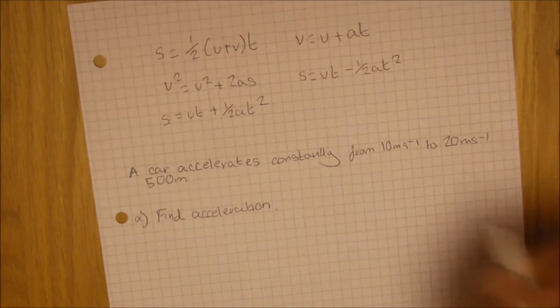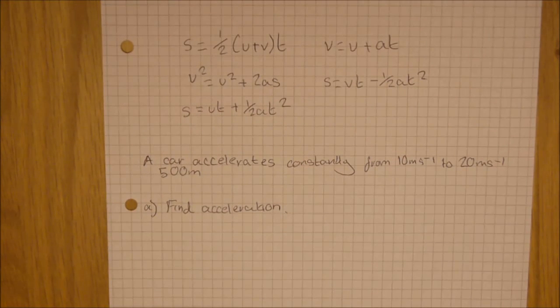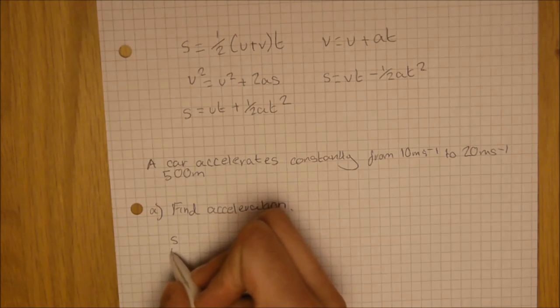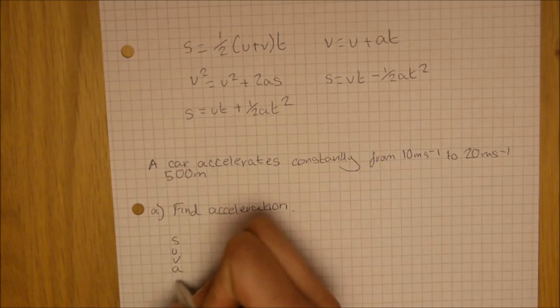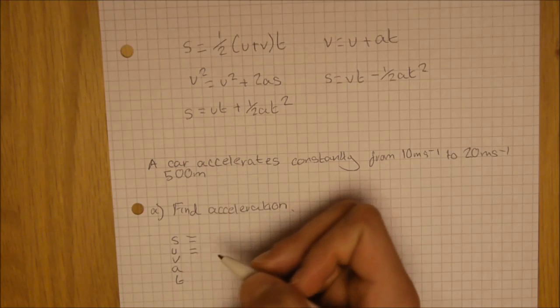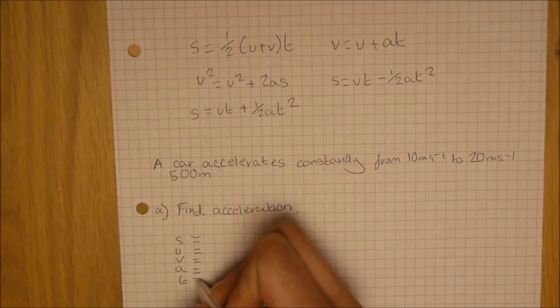Now, the first way you've got to do is you've got to work out which equation to use. And the only way of knowing which equation to use is if you work out what variables you do have and which ones you don't. So what you normally do is you start by writing S, U, V, A, T. SUVAT. And S is distance, U is initial velocity, V is velocity, A is acceleration, and T is time.